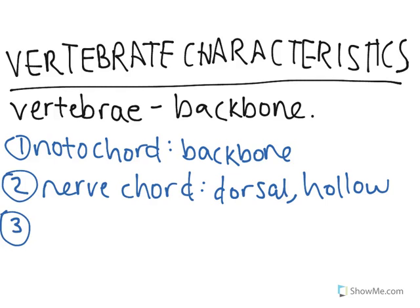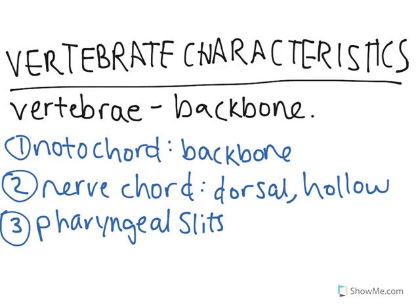The third vertebrate characteristic is also a little less intuitive: pharyngeal slits. Pharyngeal basically refers to the pharynx, which is by your neck. What this does is it allows water to enter the mouth and exit without going through the full digestive tract. This can take the form of ears for humans or gills for fish.